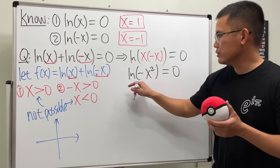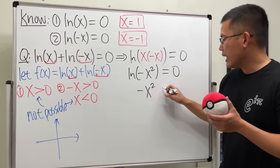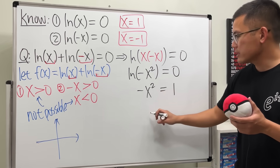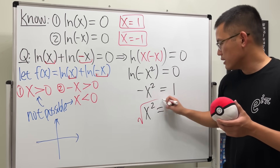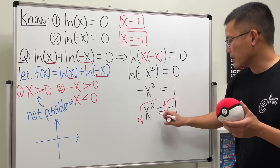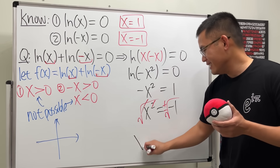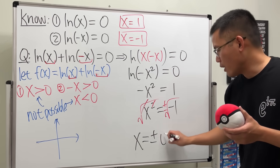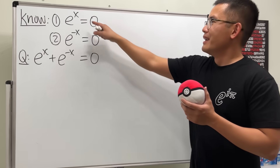We can still solve this by exponentiating both sides: -x² = e⁰ = 1. Dividing by -1 gives x² = -1, and taking the square root (don't forget ±): x = ±√(-1) = ±i. So the complex solutions are x = i and x = -i.